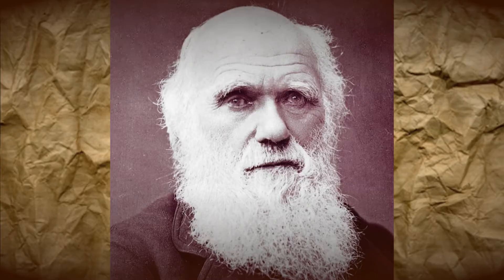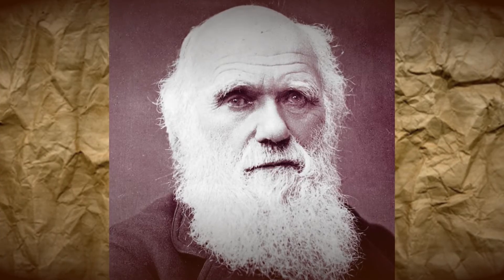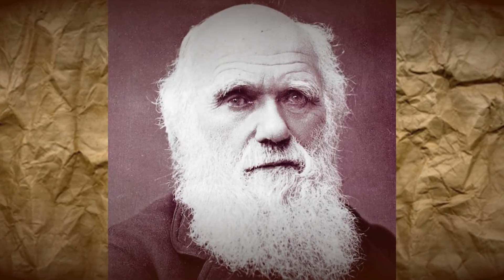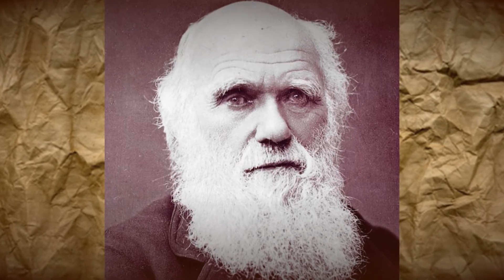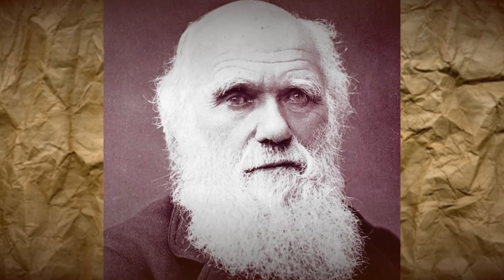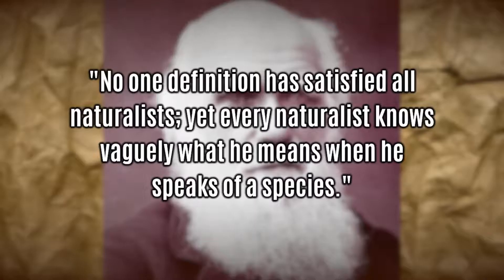This is actually a lot harder than you might think. Charles Darwin summarised the issue nicely in a statement he made in 1859 in On the Origin of Species, when he wrote that no one definition has satisfied all naturalists, yet every naturalist knows vaguely what he means when he speaks of a species.